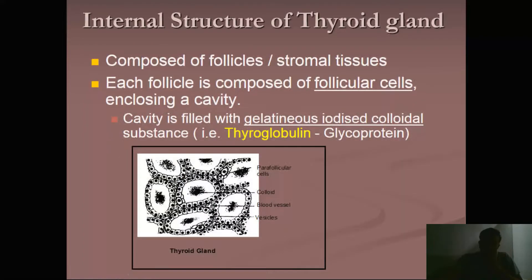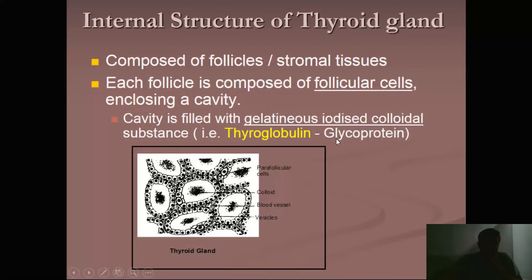Now moving towards the internal structure. It is composed of follicular cells — this is the basic unit of the thyroid gland. This unit is called follicular tissue, which is made up of different cells referred to as follicular cells. In between this follicular tissue there is a cavity — a lumen space — filled with a gelatinous iodized colloidal substance called thyroglobulin. Thyroglobulin is a glycoprotein and is very necessary for the biosynthesis of thyroid hormones.